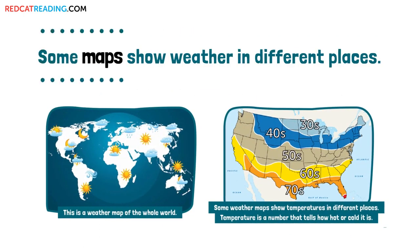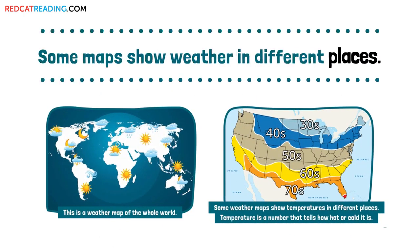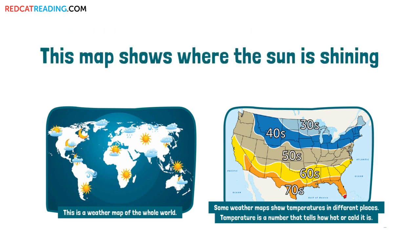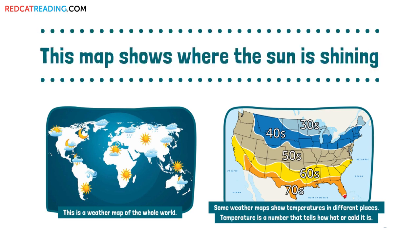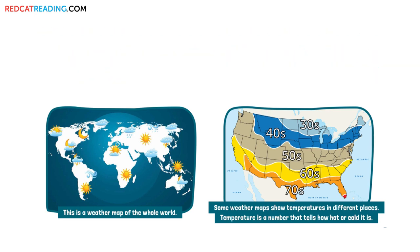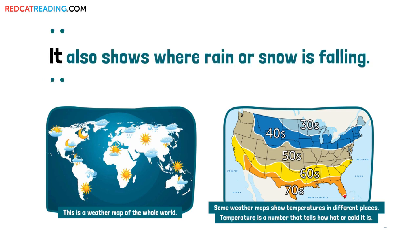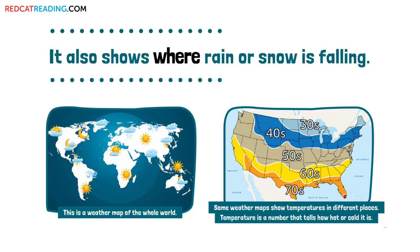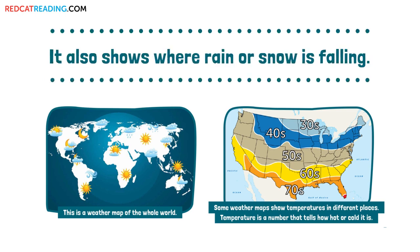Some maps show weather in different places. This map shows where the sun is shining. It also shows where rain or snow is falling.